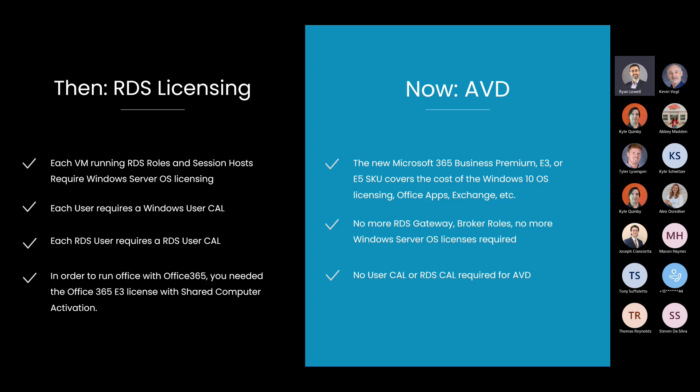With Azure Virtual Desktop, they're now building that entitlement into the Office 365 or Microsoft 365 licenses you're already using today. If you have Microsoft 365 Business Premium, Microsoft 365 E3, or Microsoft 365 E5, that actually covers the use of the Windows 10 operating system in Azure Virtual Desktop. It's important to note these are the Microsoft 365 E3 and E5, not the Office 365 E3 or E5 — only the Microsoft 365 license entitles you to that use. No RDS gateways, no brokers, no Windows servers, no user CALs, no RDS CALs required.